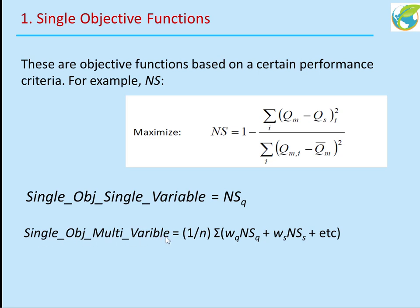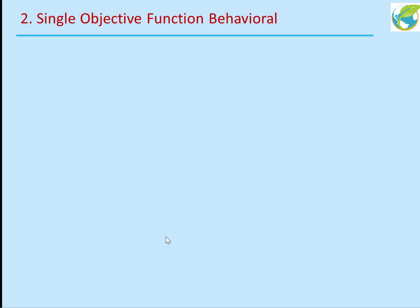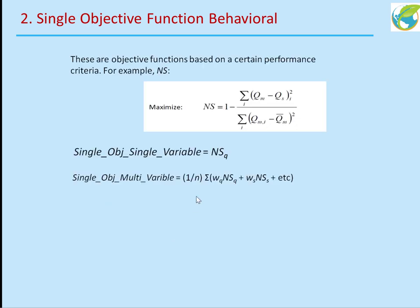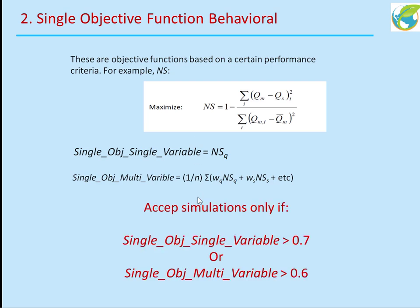For a single objective function that is behavioral, you do what you had before with the difference that you put a certain threshold on the acceptable value of Nash-Sutcliffe for every simulation. You accept simulations only if the single variable Nash-Sutcliffe value is larger than 0.7, or if you have multiple variables, the averaged Nash-Sutcliffe is more than 0.6 or any other threshold value.